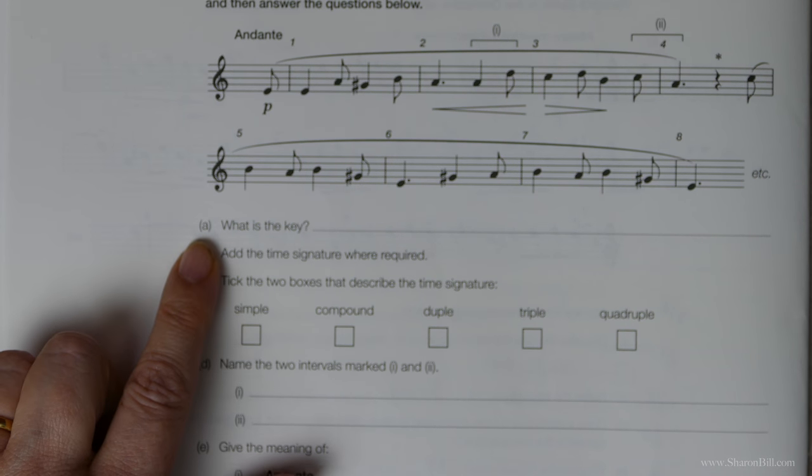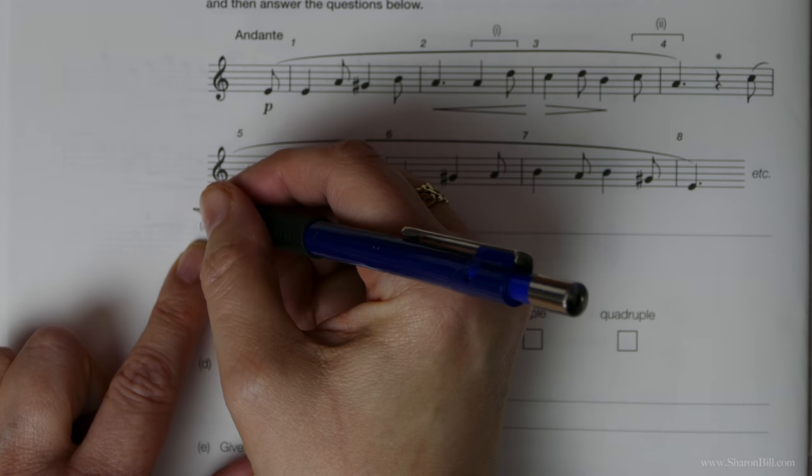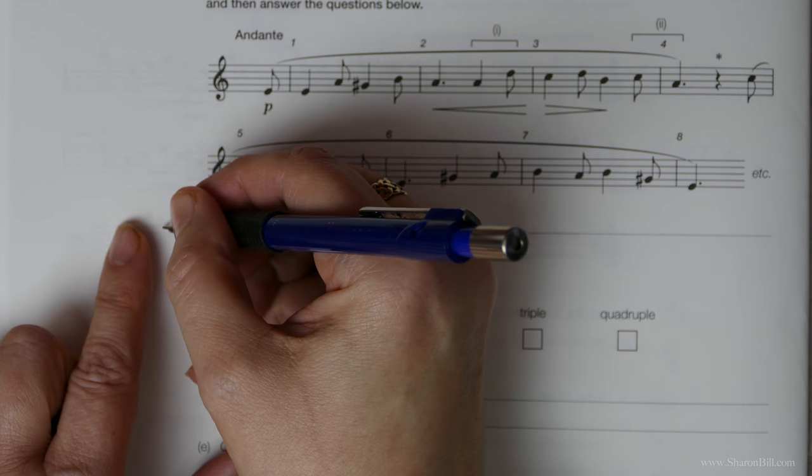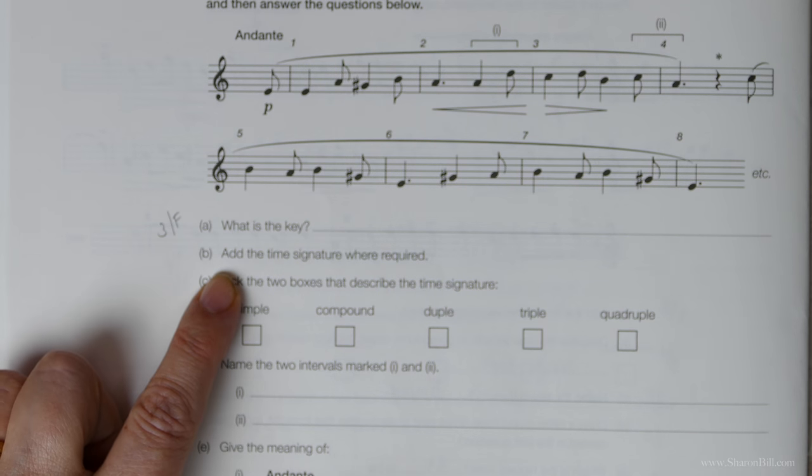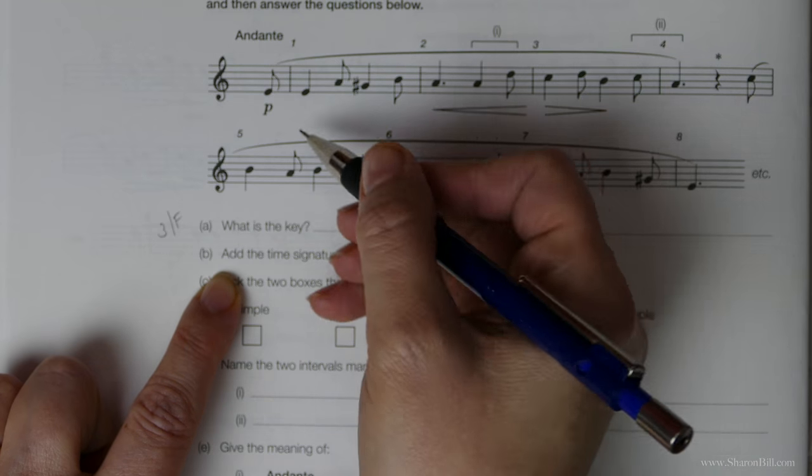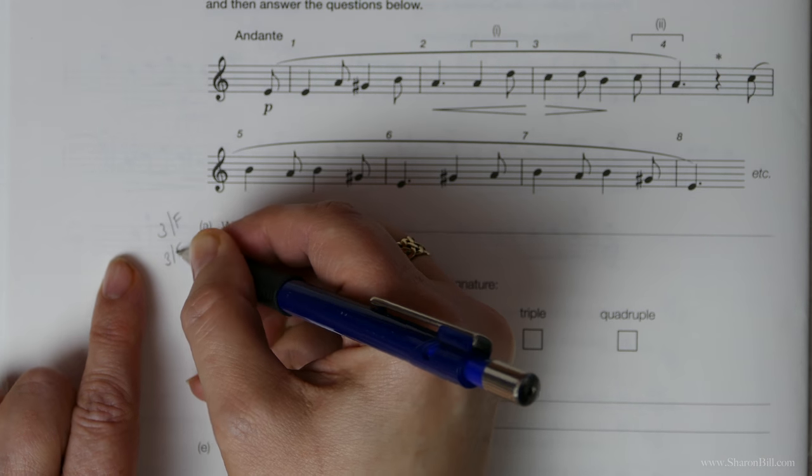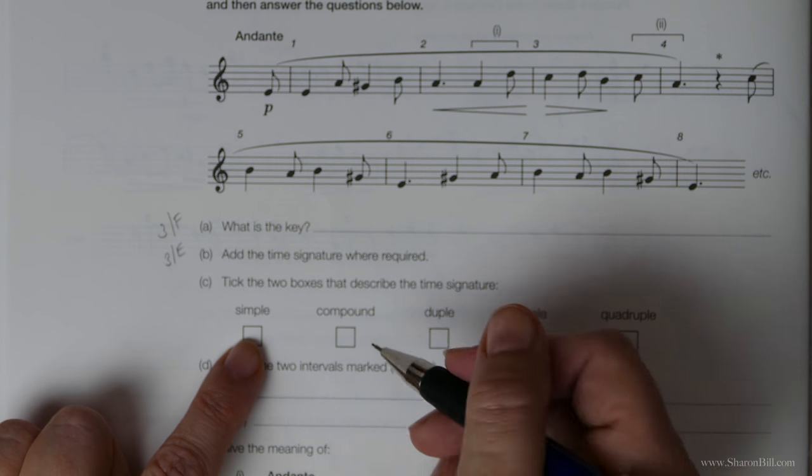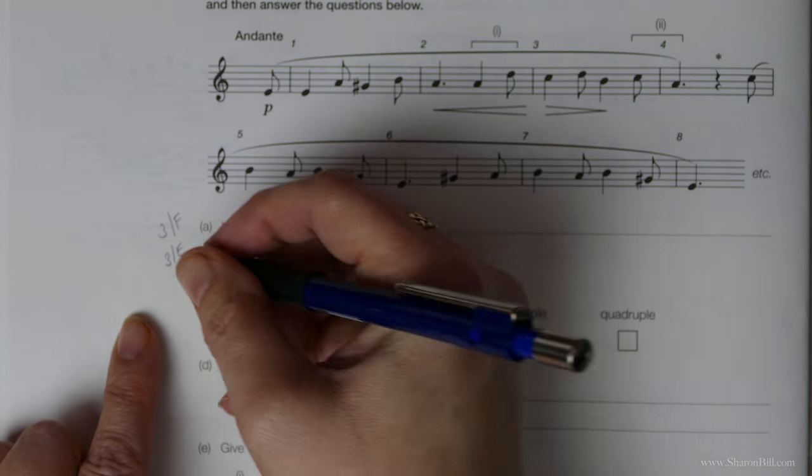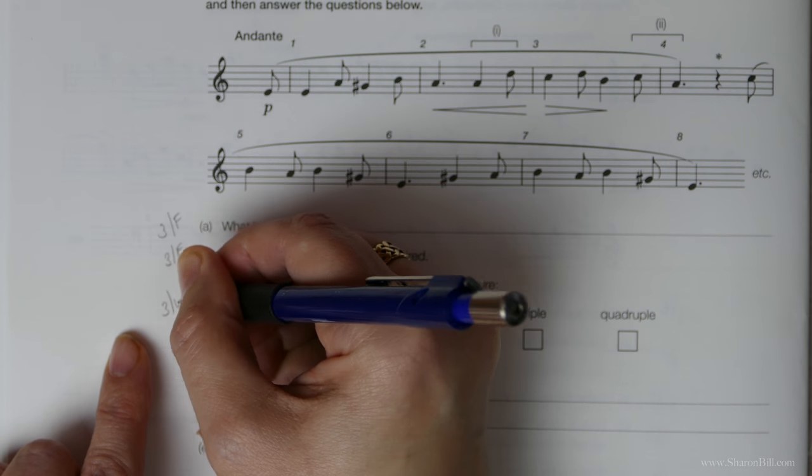So let's crack on. The first question is asking what key we're in and you'll find how to work that out if you look at grade 3 section F. The time signature that you need to look for is grade 3 section E. We've got to describe whether it's compound, simple and all of those aspects and you'll find that also in grade 3 section E.